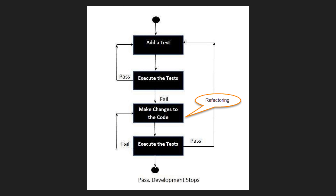There is also another flowchart for this. Add a test case, then execute the test. If it passes, you add another test. If it fails, you make changes to the code — if the code is not present, you write the new code. You can also refactor the code here, and again execute the test. If it passes, you can add a new test again. If it fails, you make changes to the code again. This is the process where TDD is involved, and development stops once all tests pass.